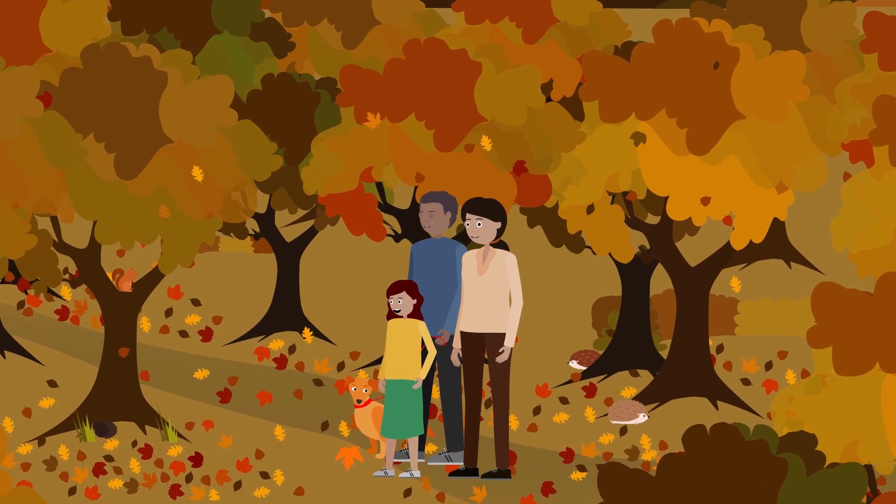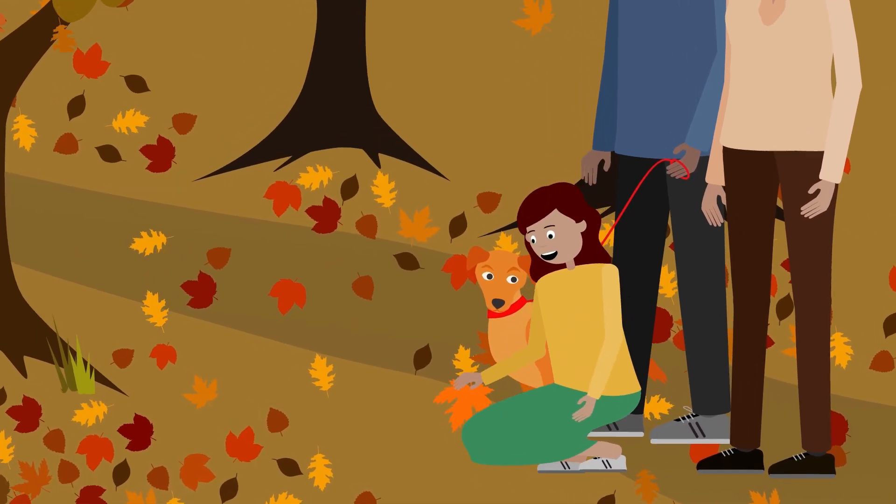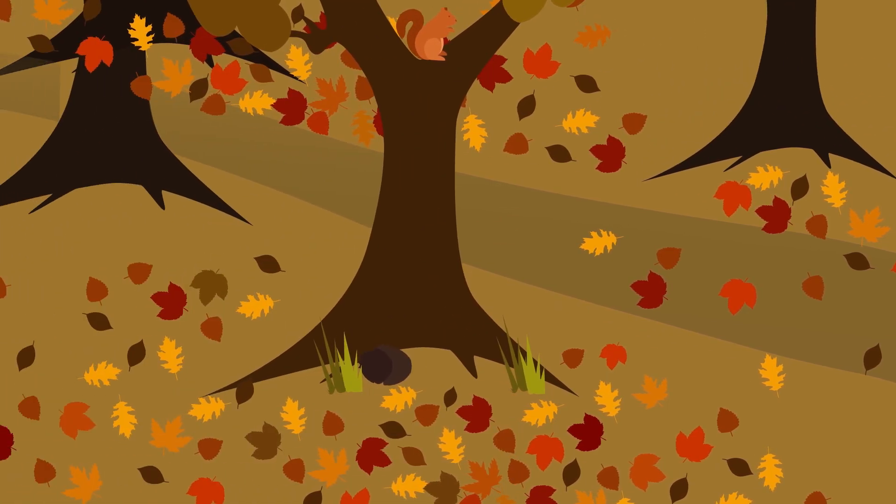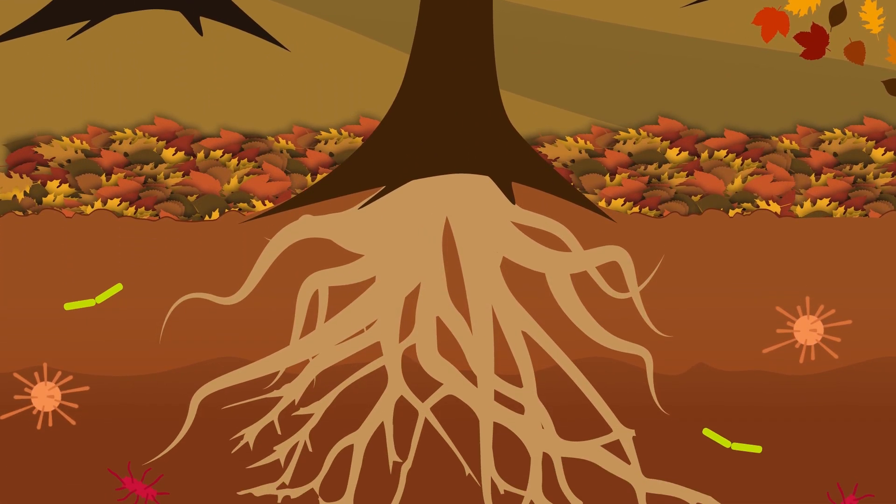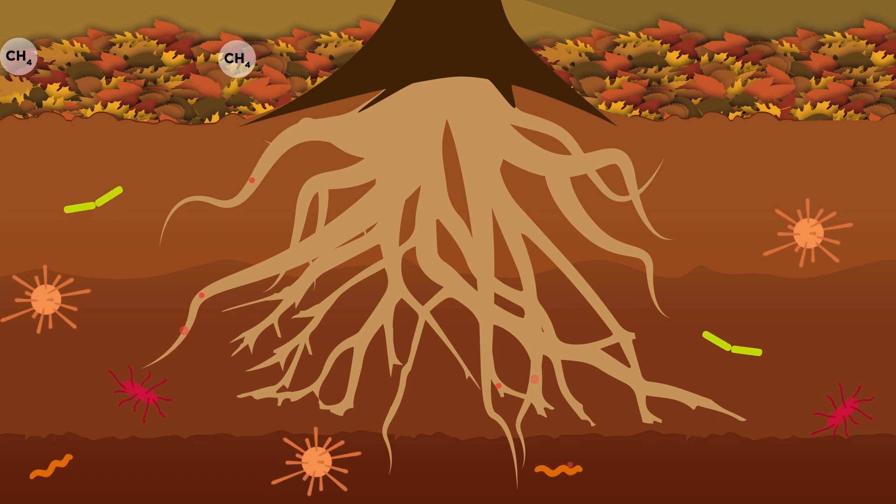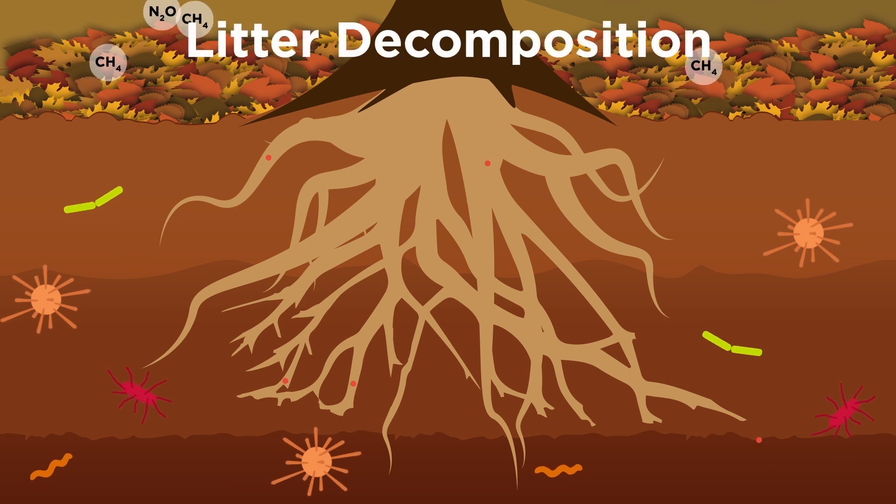Fallen leaves are a feast for soil organisms. They break down the leaves, providing themselves with essential nourishment, whilst releasing nutrients important for plant growth, and simultaneously producing greenhouse gases like CO2. This process is called litter decomposition.